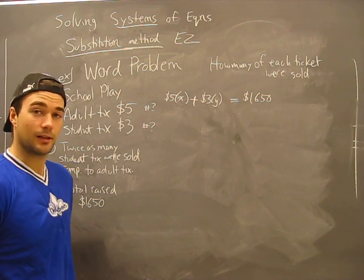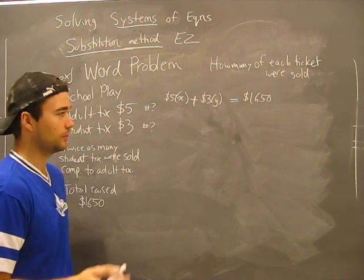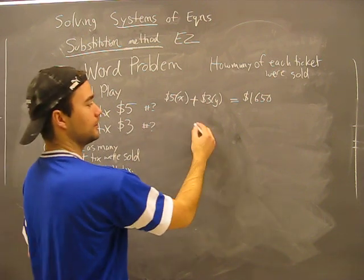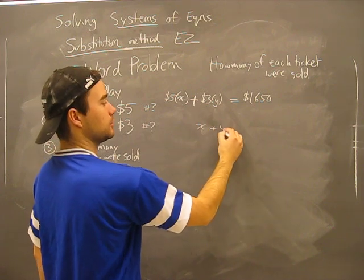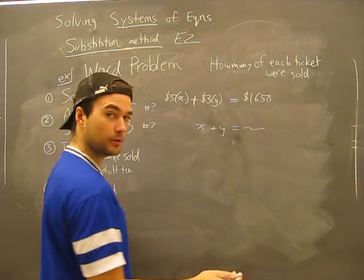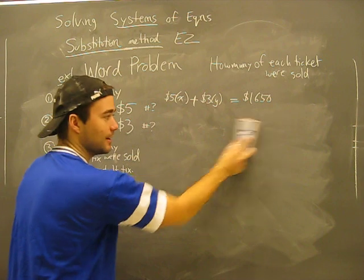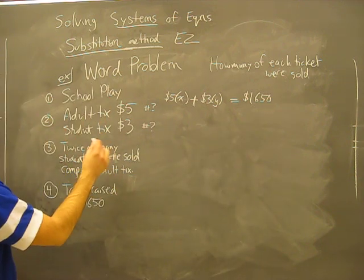Holy moly. This looks like a system of equations developing here. Think about this, we have 5X plus 3Y equals something. Very familiar. What else do we know about this?